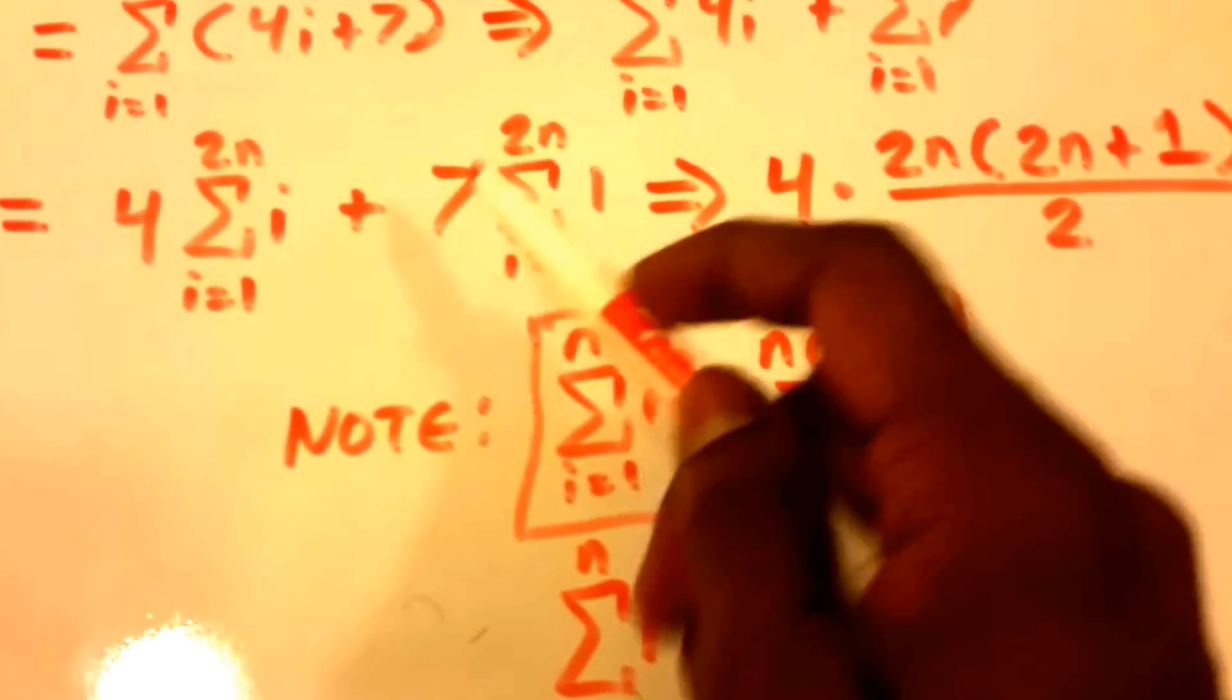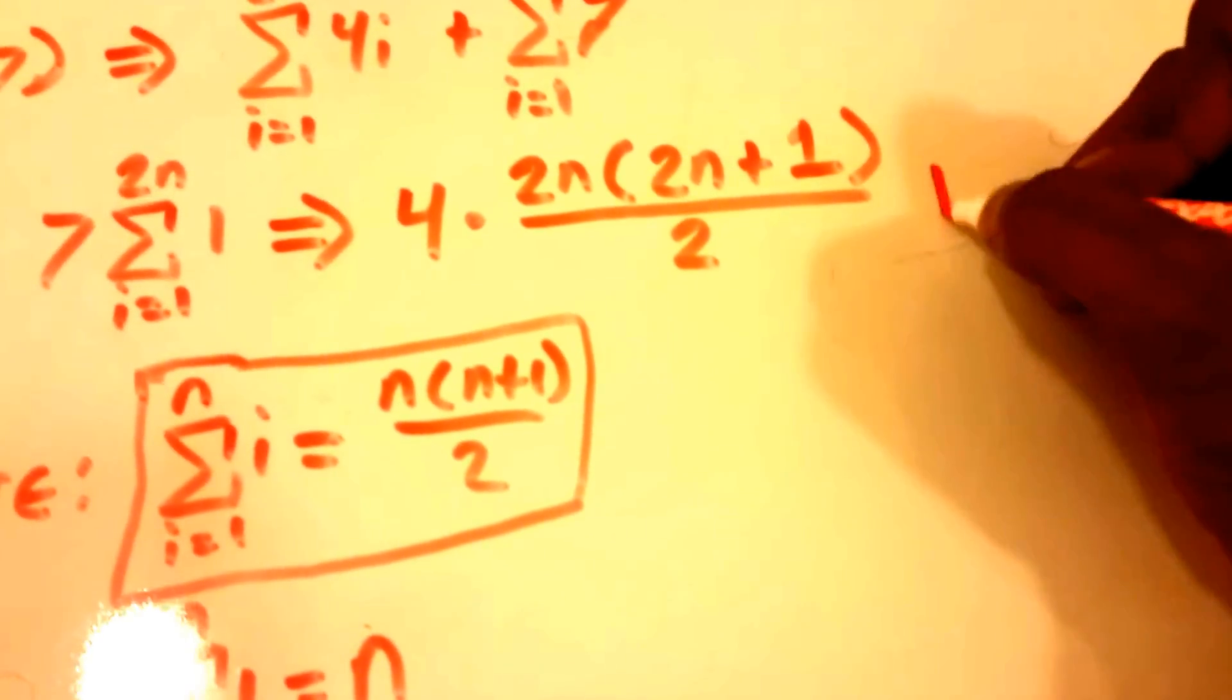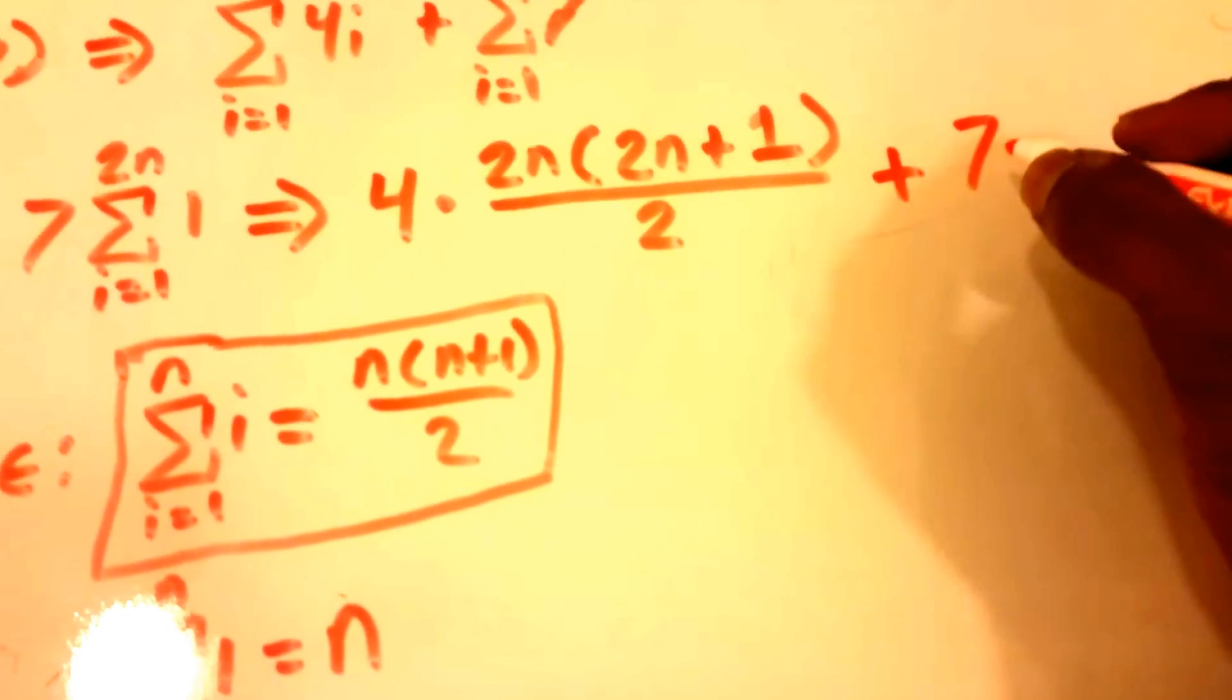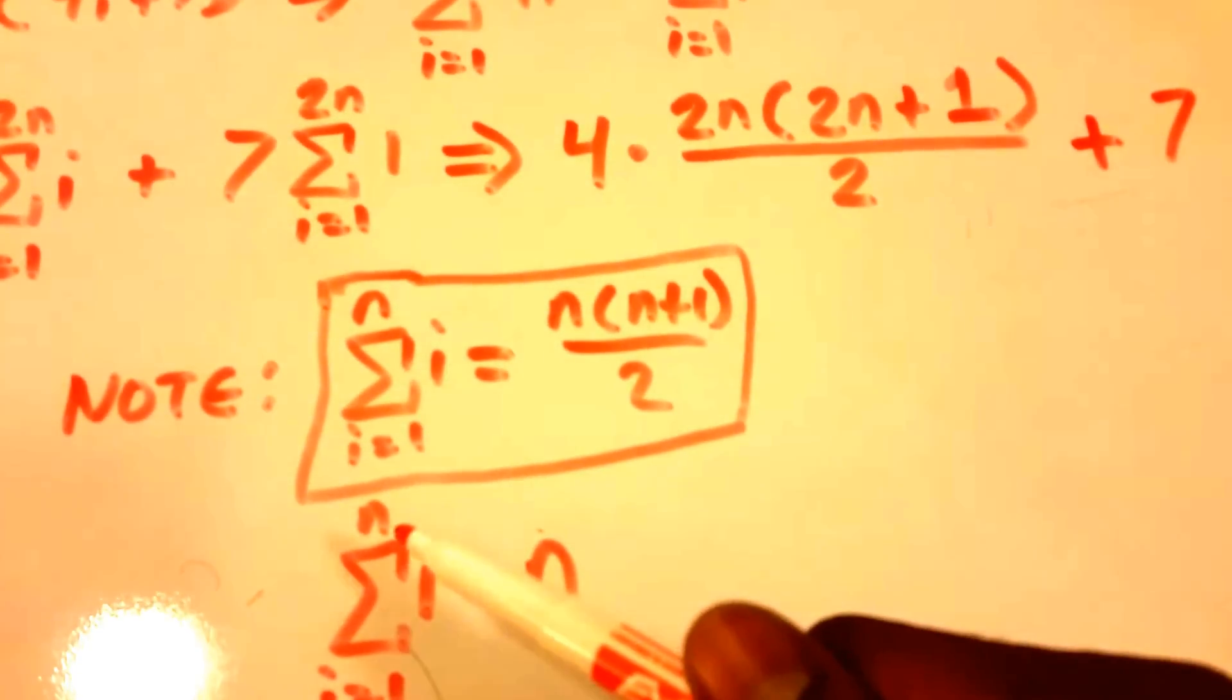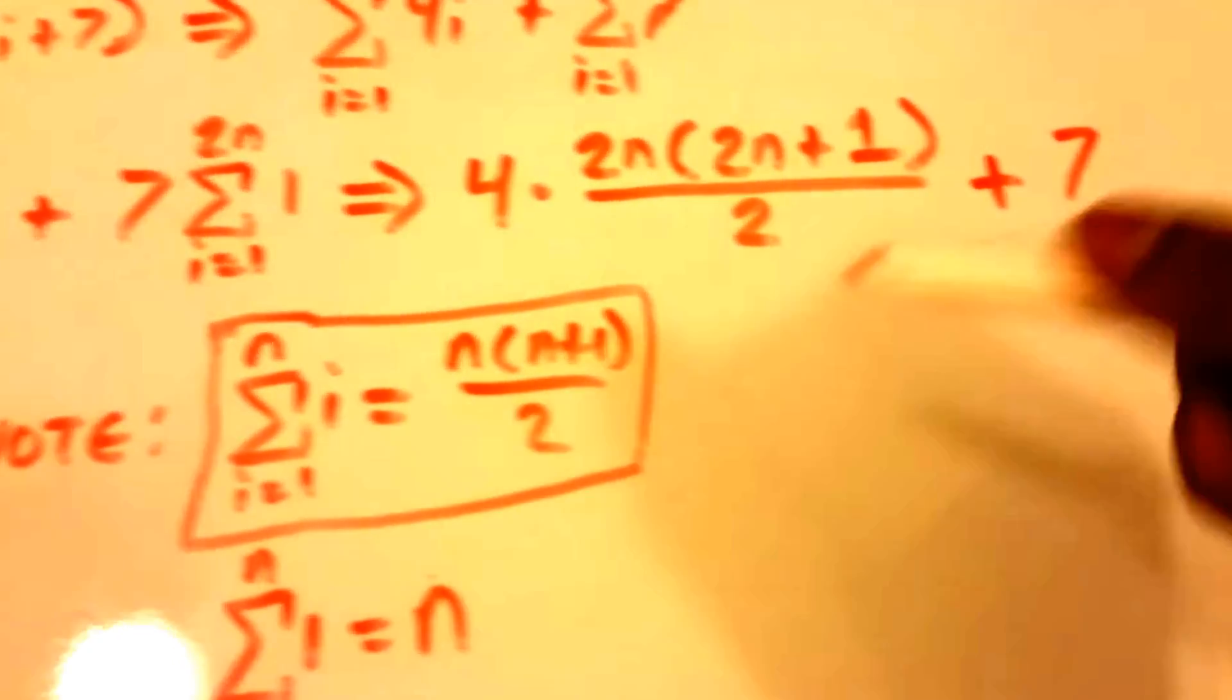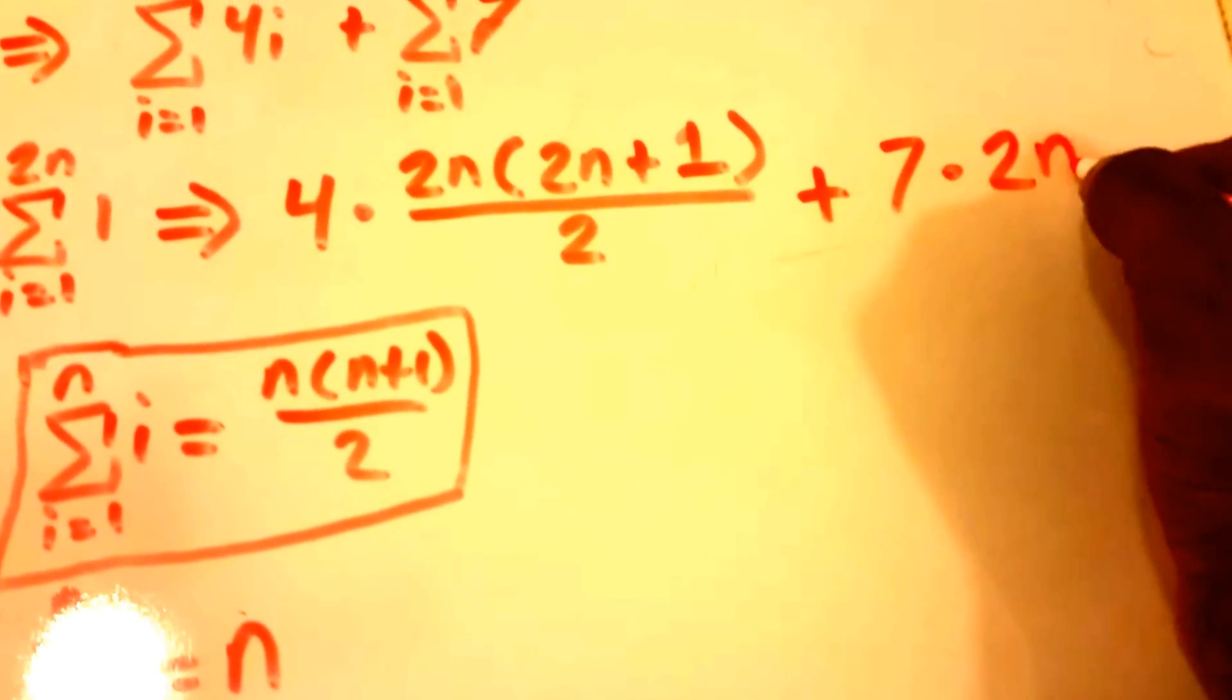So next up is this second summation. We're going to need that 7, so let me say plus, and then we have 7 times, let's see, we have 2n down here, we only have n, so we just substitute 2n for the value n here and we're just going to get 2n. So times 2n.